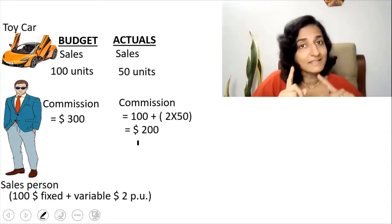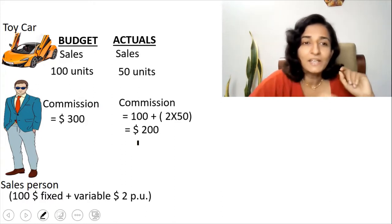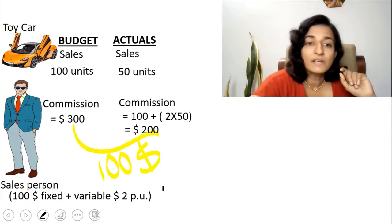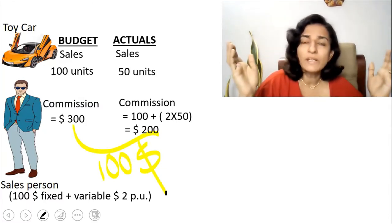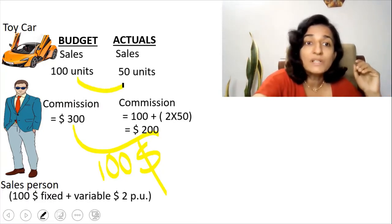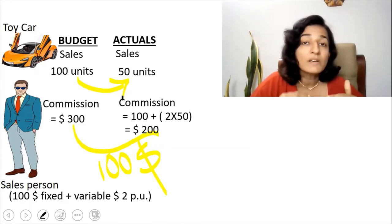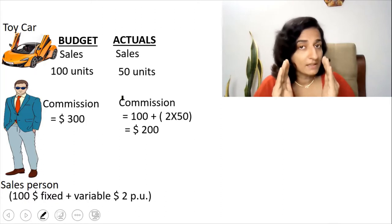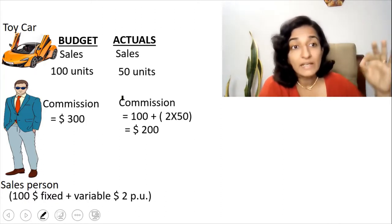While analyzing the variances — that is, the difference between the budgets and the actuals — can you say that you have made a savings of $100, that is $300 minus $200? Absolutely not. It is not a savings; it is just that the units have reduced from 100 to 50, and that is why we have got a reduction in cost. So it is not meaningful to compare the actual results with the budgets of some other activity level.